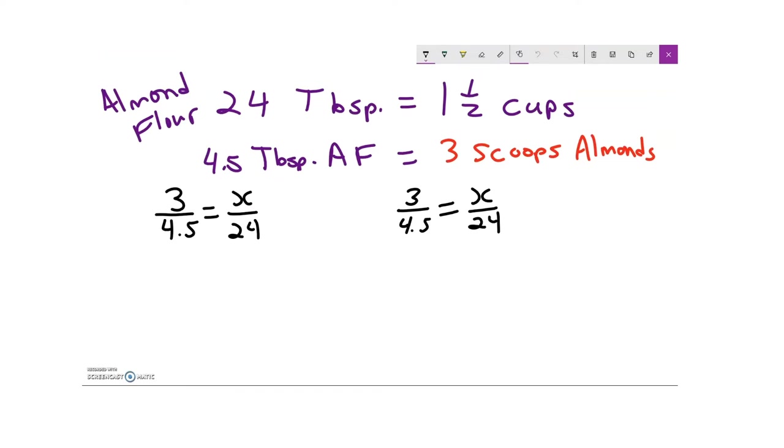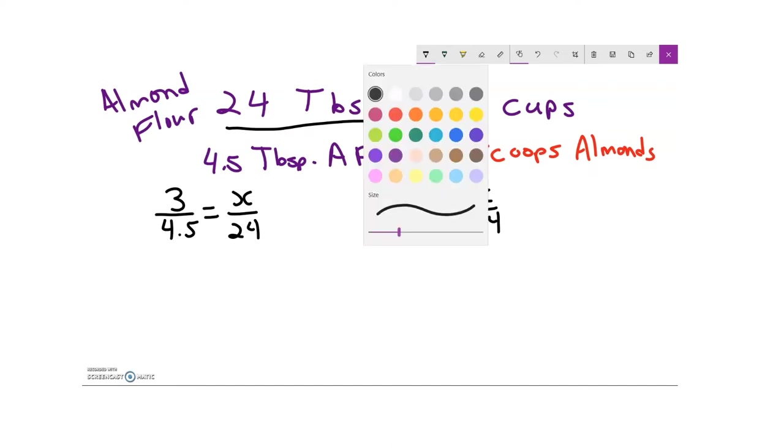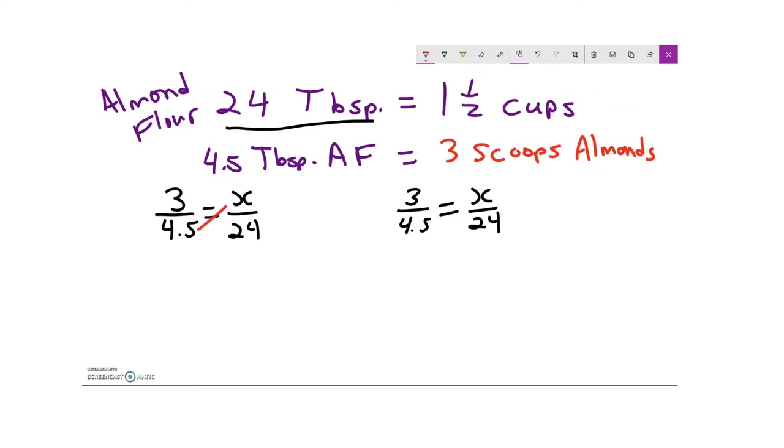Okay, so now we're ready to answer the second part of our problem, which is how many scoops of almonds do we need to make 24 tablespoons of almond flour, which is our one and a half cups? Well, one way to do this is to set up a proportion and solve for x. So one thing I could do is cross multiply. I could say that three times 24 is equal to 4.5 times x. If I divide both sides by 4.5, I would find that 72 divided by 4.5, 16 is equal to x. So 16 scoops of almonds.